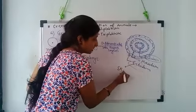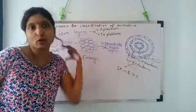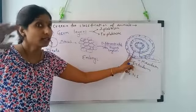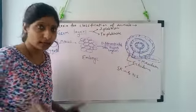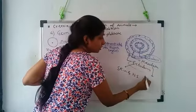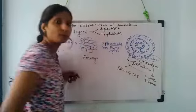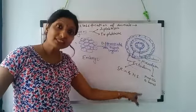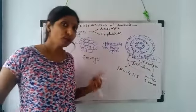What is that? Ectoderm forms skin and nervous system. That means neurons, brain, spinal cord, nerves and skin - these tissues will not form any other organ. It will form skin and nervous tissue. Mesoderm's function is to form muscles and bones.